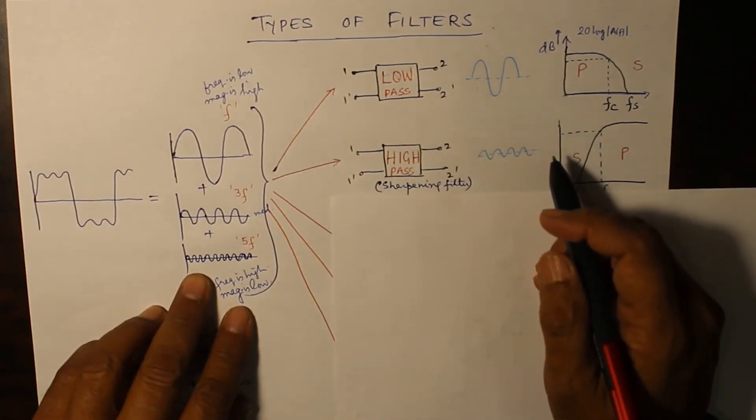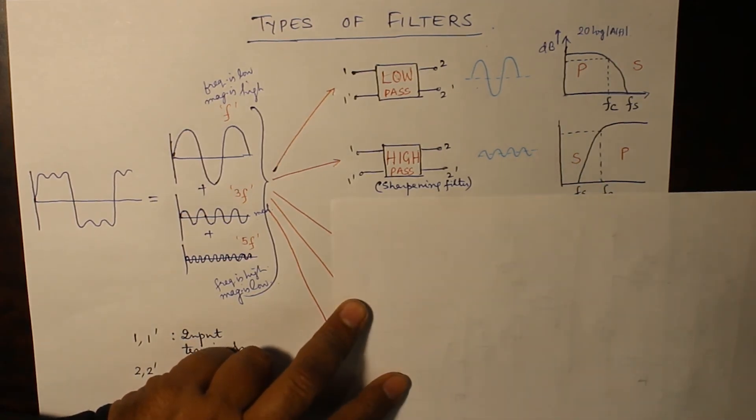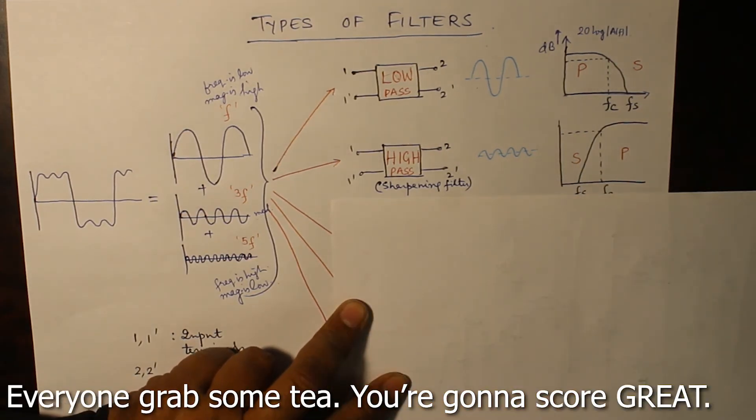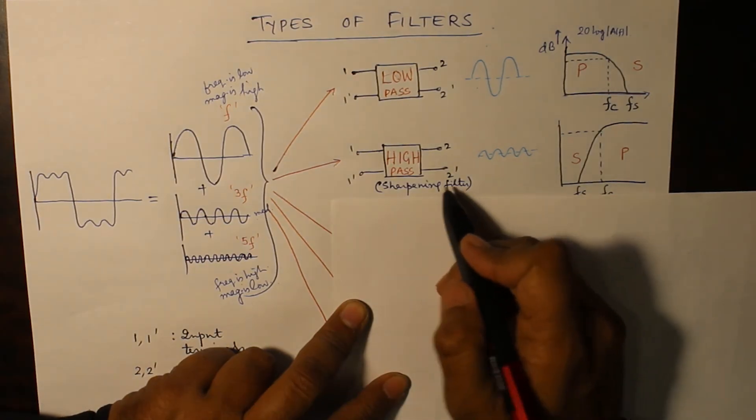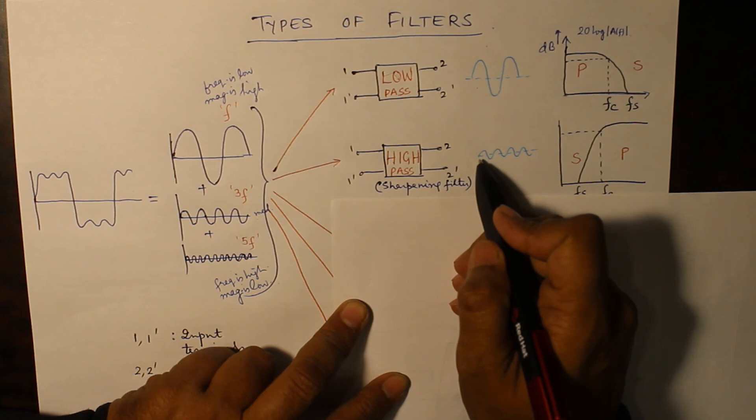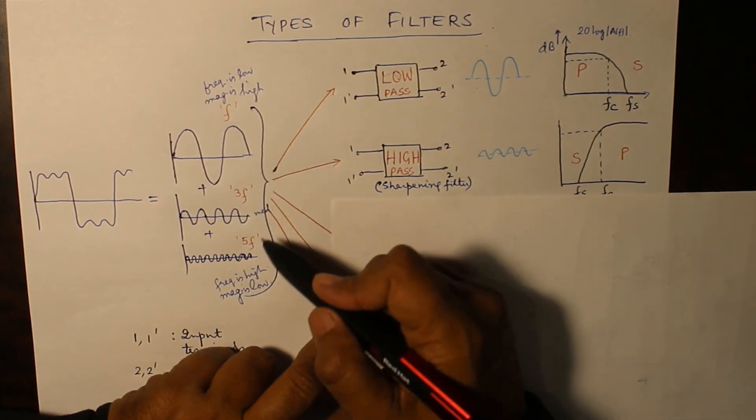If you take an ideal filter frequency response it would be straight horizontal lines. The second one is a high pass filter, which is also known as a sharpening filter. In sharpening filter we are rejecting the low frequencies and we are just having the high frequency to pass through.